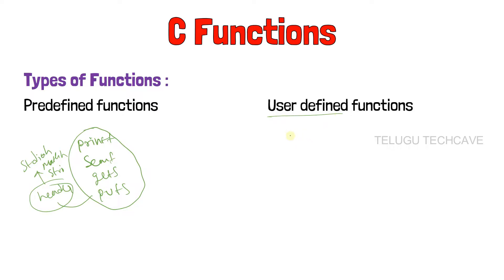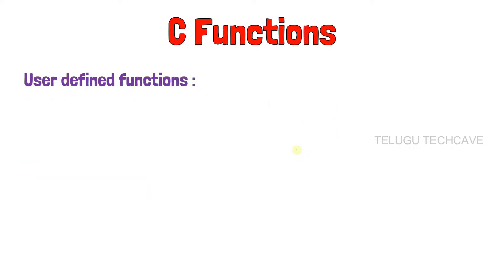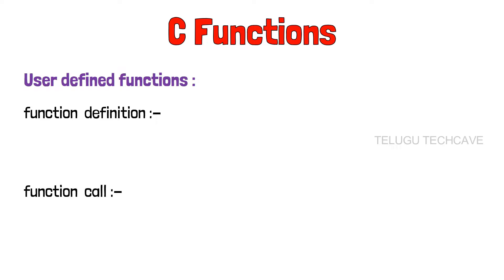Next, user-defined functions. User-defined functions are a programmer-created type — that means we create them ourselves. That is user-defined functions. So let's look at how to create user-defined functions. If we create or use a function, we have three steps. The first is function definition — to define the function. Next is function call — to call the function in the program. Next is function declaration — we declare it like a variable.